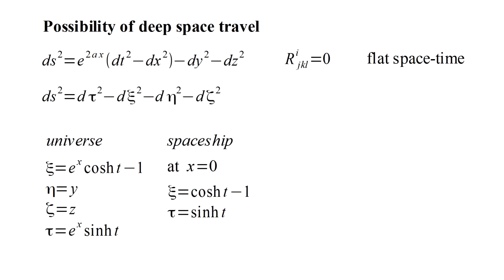If we assume our spaceship is at x equals zero, then as a function of spaceship time, t, universe position psi is coche t minus one, and universe time is cinch t. For t much bigger than one, these are both approximately one-half e to the t exponential growth. If we accelerate uniformly, our travel distance grows exponentially.